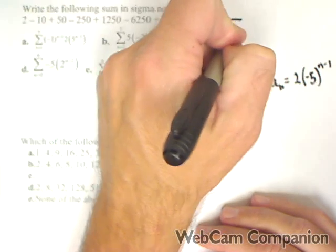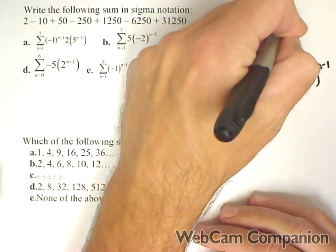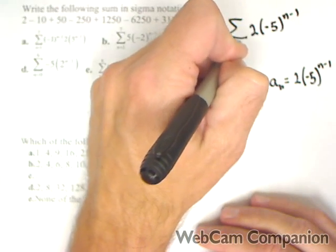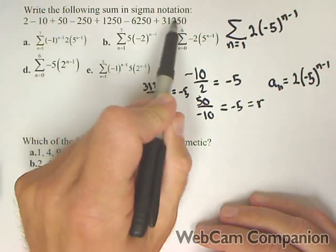So in summation notation, this is going to be 2 times negative 5 to the n minus 1 from n equals 1. And then I have 1, 2, 3, 4, 5, 6, 7 terms.